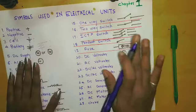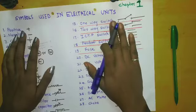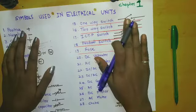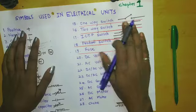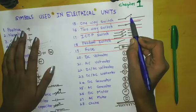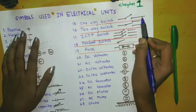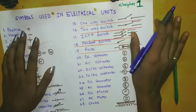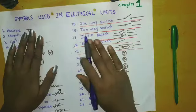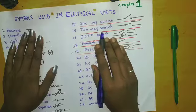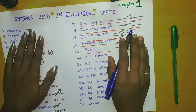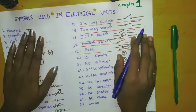Moving further to switches. This is a one-way switch, which is used commonly — a simple switch that operates when the switch is on, then the bulb or anything in the output will be in the circuit. This is a two-way switch. This switch can operate a single lamp from two different locations.